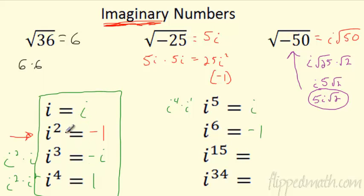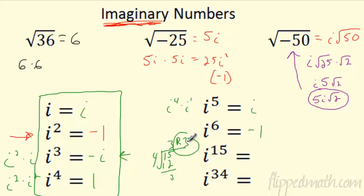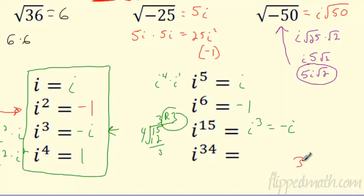If you want to find i to the 15th, you can continue the pattern, or think of it this way: how many times does 4 go into 15? That's 3 times, with a remainder of 3. That remainder gives you the power — it's i cubed, which equals negative i. For i to the 34th: 4 goes into 34 eight times, with a remainder of 2. That's like saying i squared, which is negative 1. If you get a remainder of 0, it would be i to the fourth, which is 1.